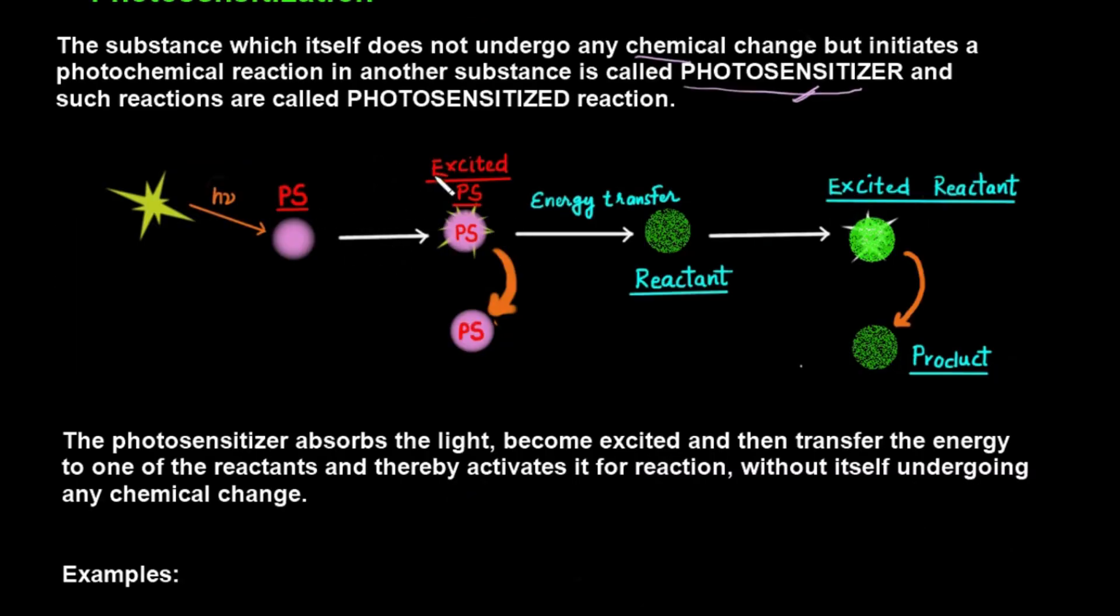To understand this phenomenon by this reaction, we have PS, which means photosensitizer, and this is the reactant which does not absorb light for photochemical reactions until or unless it is excited by providing energy from this photosensitizer. So photosensitizer's work is to absorb those radiations, and it gets excited. After absorbing the radiation, it is excited, and after excitation it transfers the energy to that reactant.